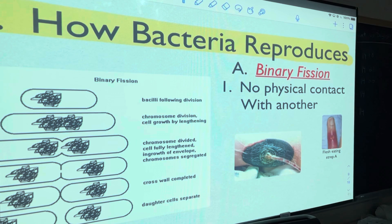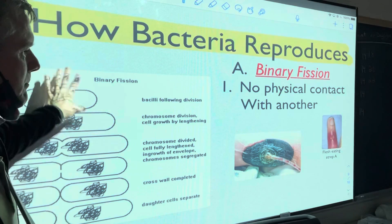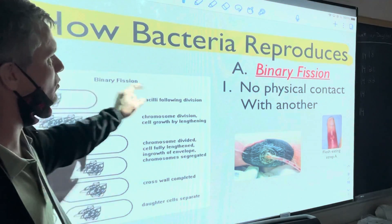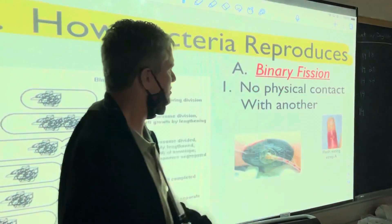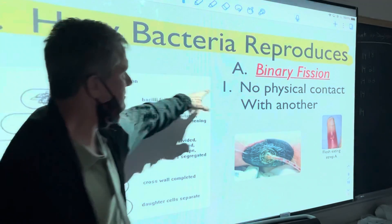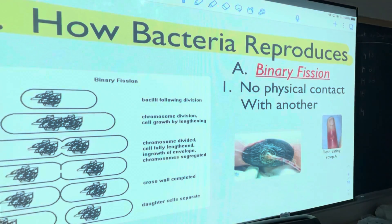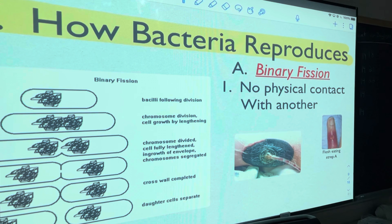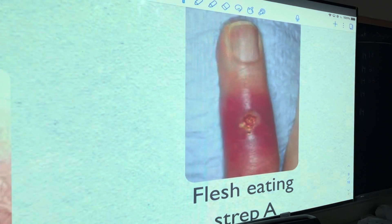There are some other things I'll show you in a second that may not strictly go through binary fission but split in a very similar way. What you need to know about binary fission is that it's fast, and there is absolutely no physical contact with another bacteria — none. This would be considered asexual reproduction, or reproduction without physical contact.